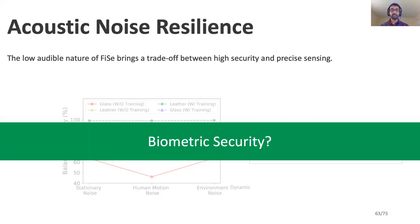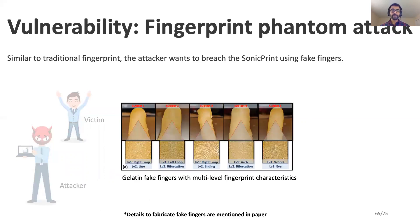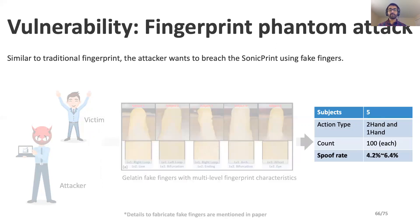To answer the question about the vulnerability of SonicPrint, we imagine a scenario where an attacker recruits the help of a victim to fabricate his fake fingers. These fake fingers can be further used by the attacker to spoof the system. However, we observed a very low spoof rate of 4.2%, ensuring the high security of our model.